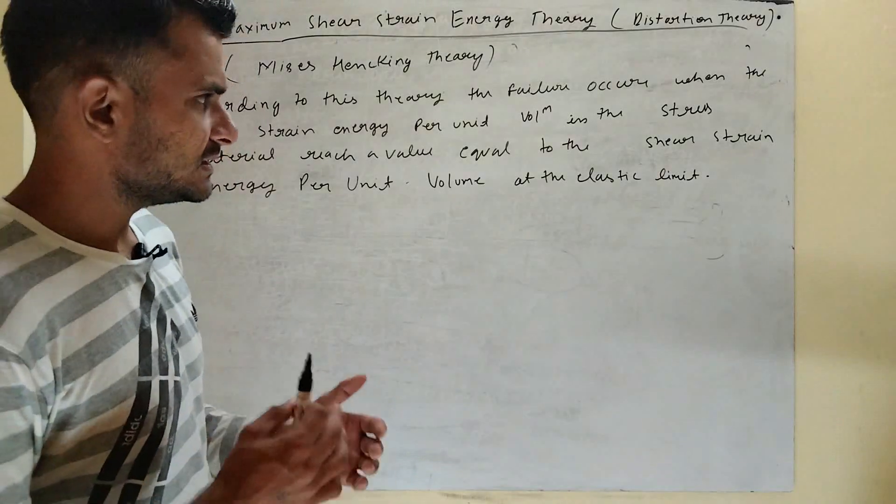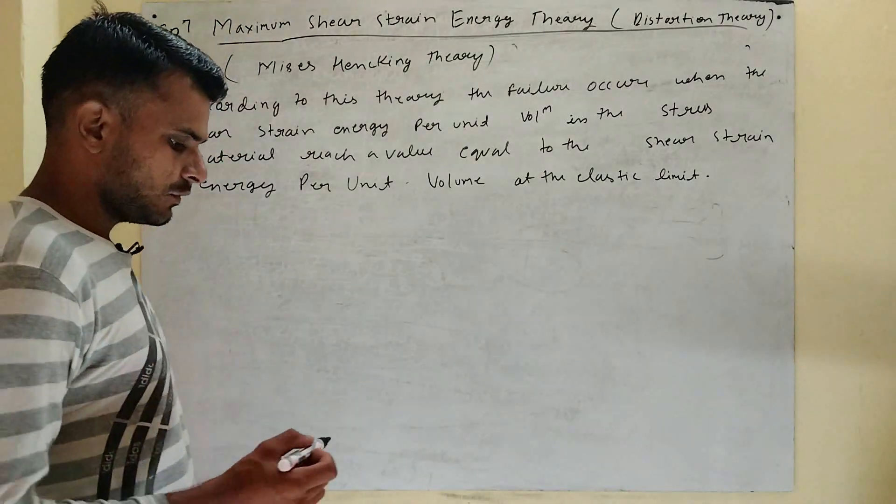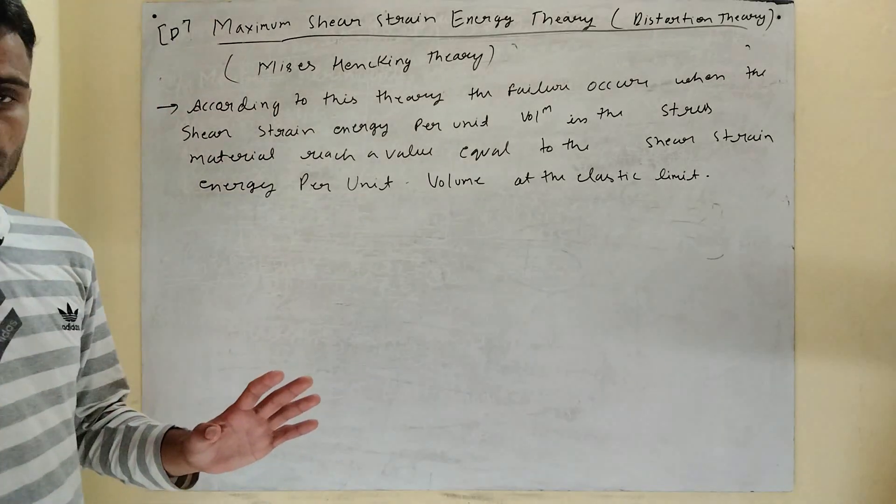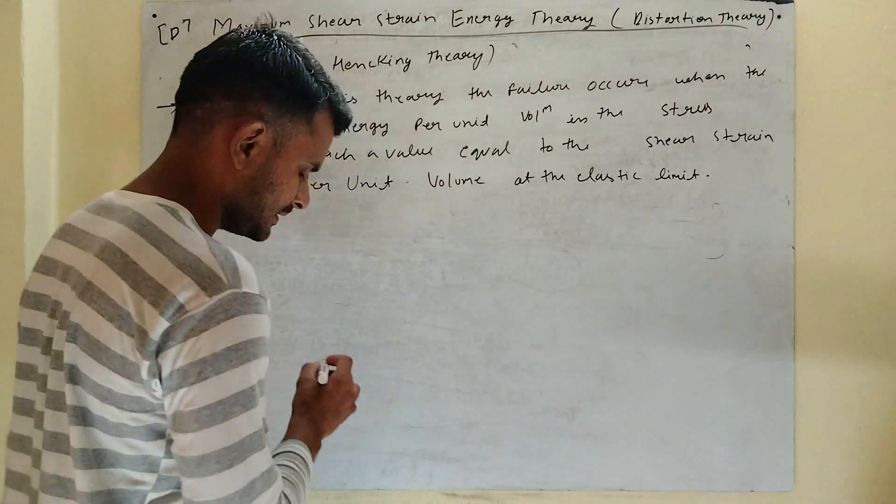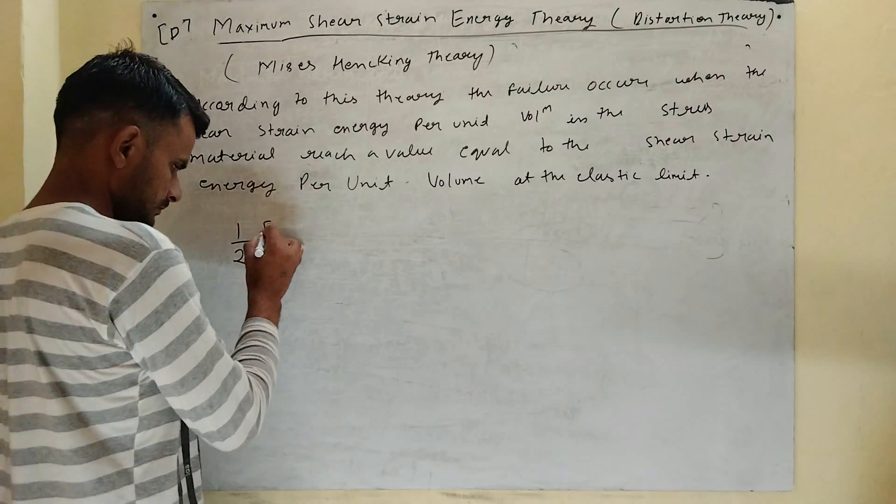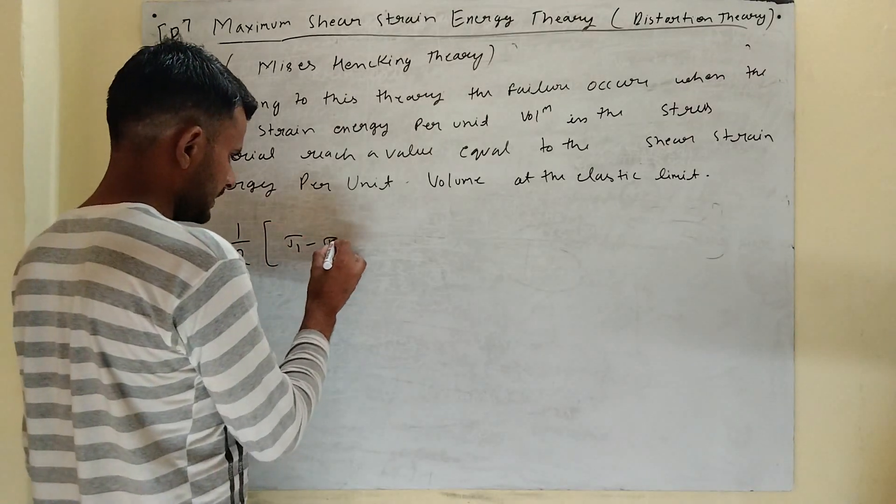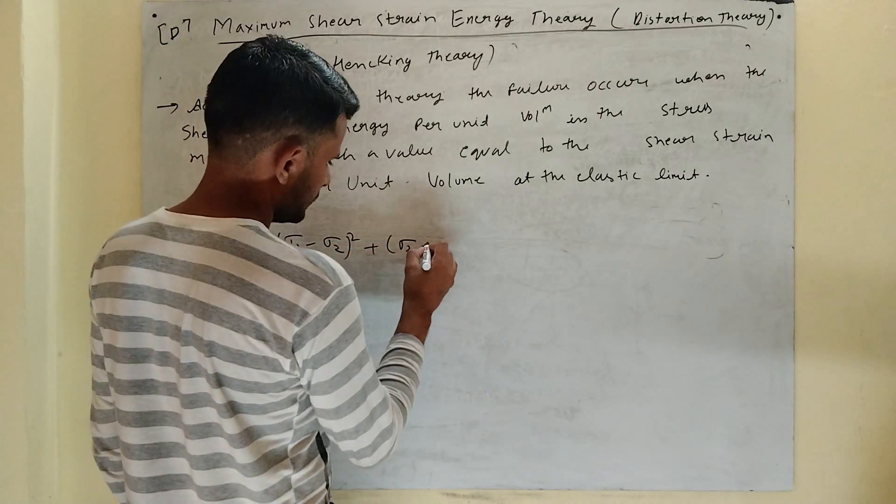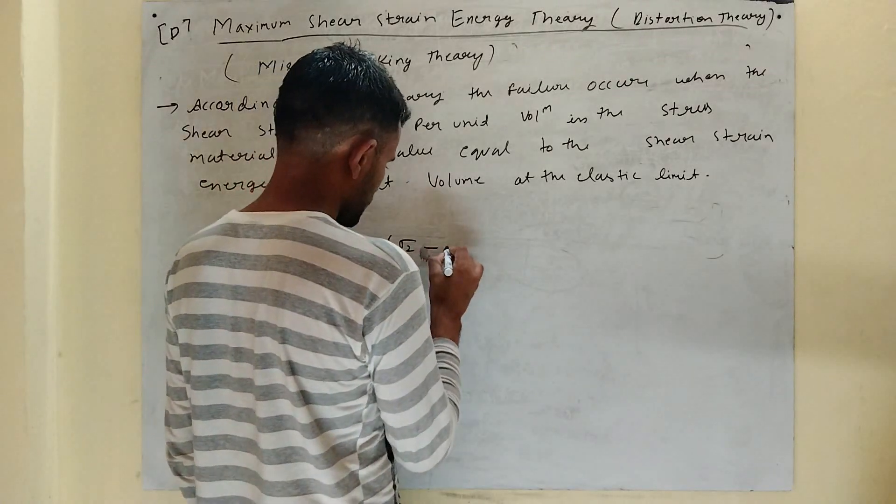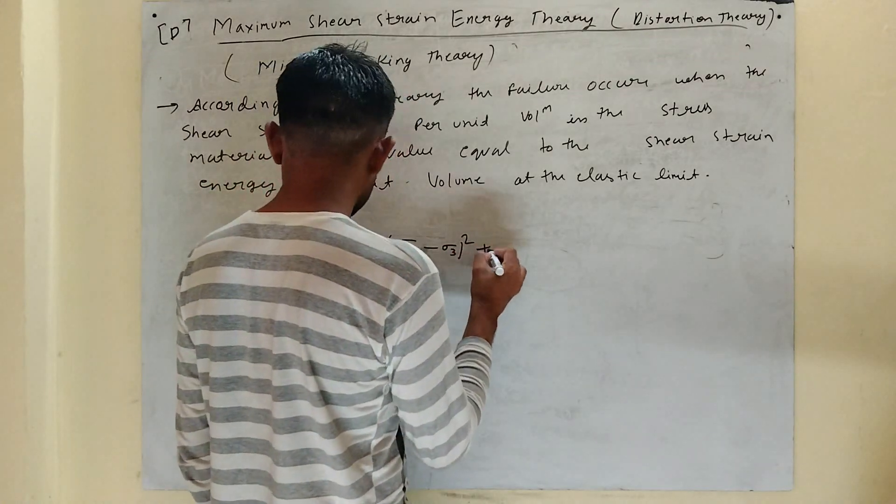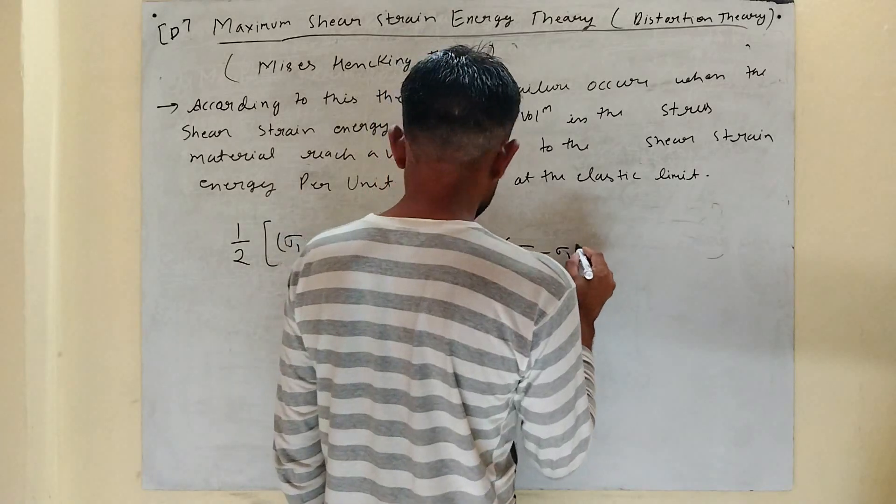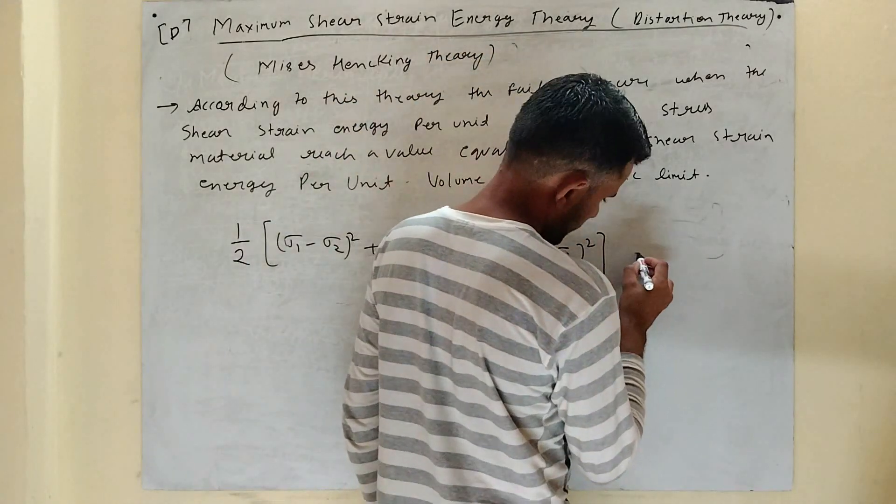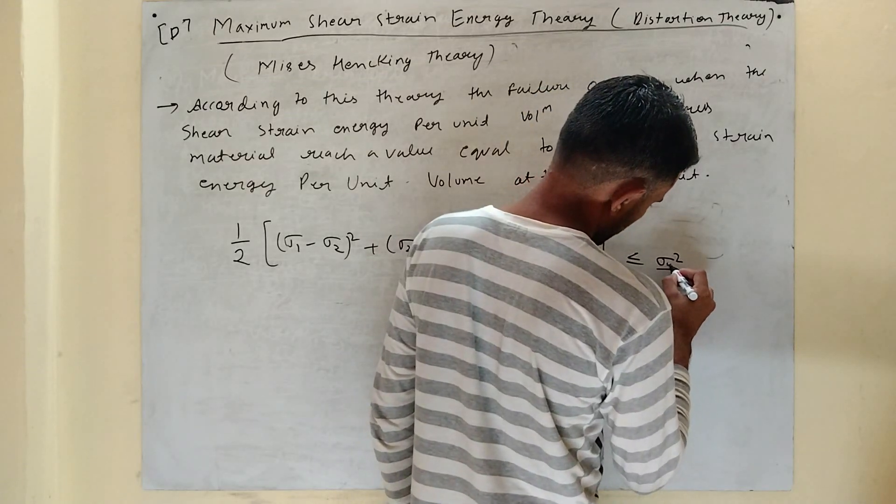We can write this formula for maximum stress energy theory. One by two times: sigma 1 minus sigma 2 squared plus sigma 2 minus sigma 3 squared plus sigma 3 minus sigma 1 squared. This is less than or equal to sigma y squared.